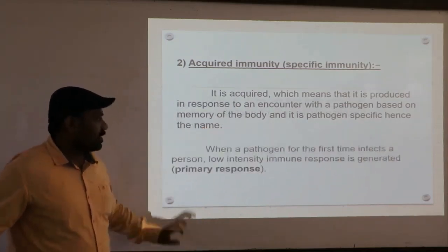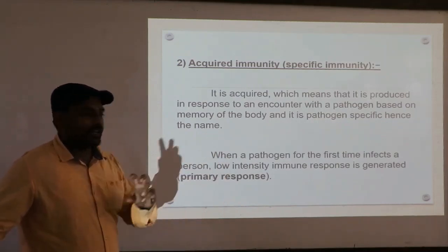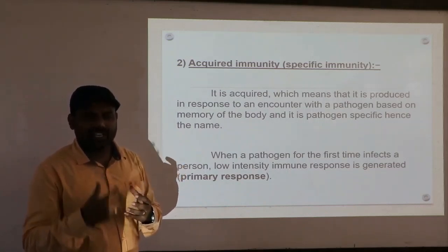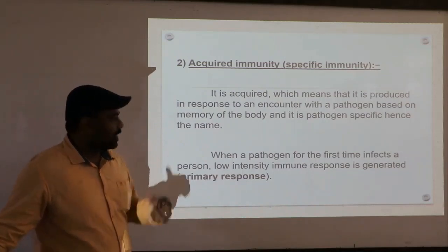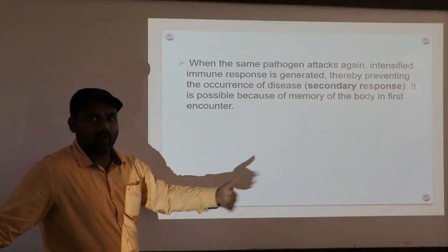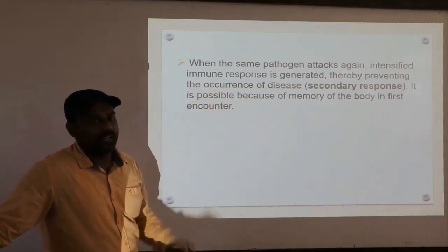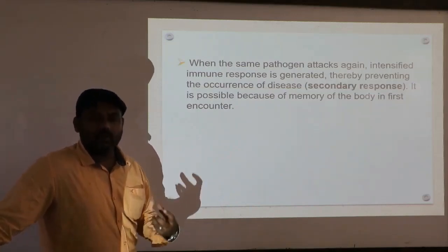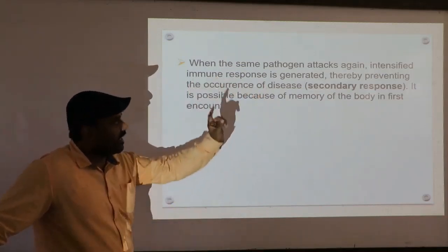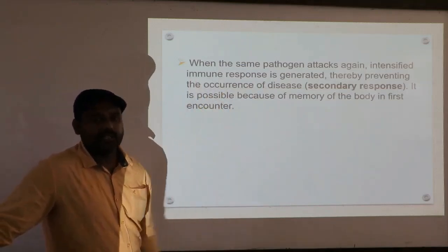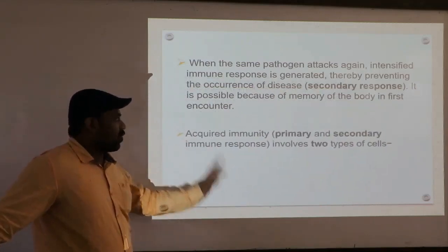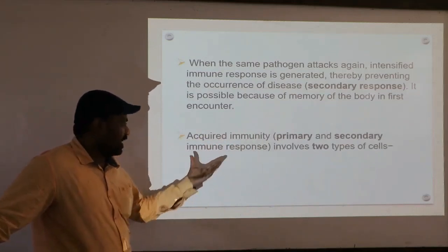When a pathogen infects a person for the first time, a low-intensity immune response is generated — antibodies are produced at a lower rate and it takes some time. This is called the primary response. When the same pathogen attacks again in the future, an intensified immune response is generated — antibodies are produced at a massive rate continuously — thereby preventing the occurrence of disease. This is called the secondary response, and it is possible because of the memory of the immune system.